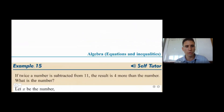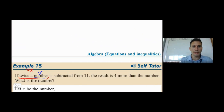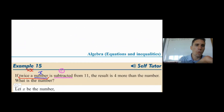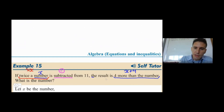Moving on to another worded problem: if twice a number is subtracted from 11, the result is 4 more than the number — what is the number? If the number is x, twice the number is 2x. 'Subtracted' translates to minus. The result is 4 more than the number — the number is x, so 4 more than it is x+4. 'The result is' means equals.